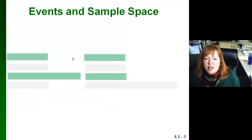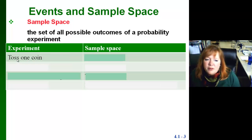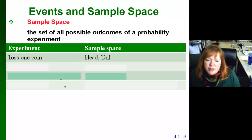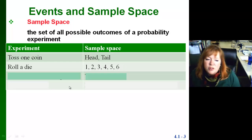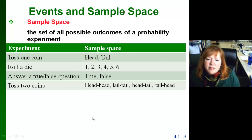Let's do some events and sample spaces. Sample space is just a set of all possible outcomes of a probability experiment. For example: toss a coin — the only possible outcomes are heads or tails. Rolling a die — your outcomes could be 1, 2, 3, or 4. Answer a true-false question — you only have two outcomes, true or false. Toss two coins — you could have heads both times, tails both times, a head and a tail, or a tail and a head. A simple event is one that has only one outcome. An event is any set of results or outcomes of a probability experiment.